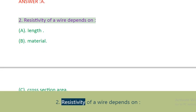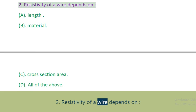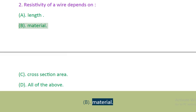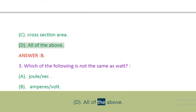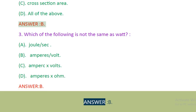Question 2: Resistivity of a wire depends on. A. Length. B. Material. C. Cross-section area. D. All of the above. Answer: B.